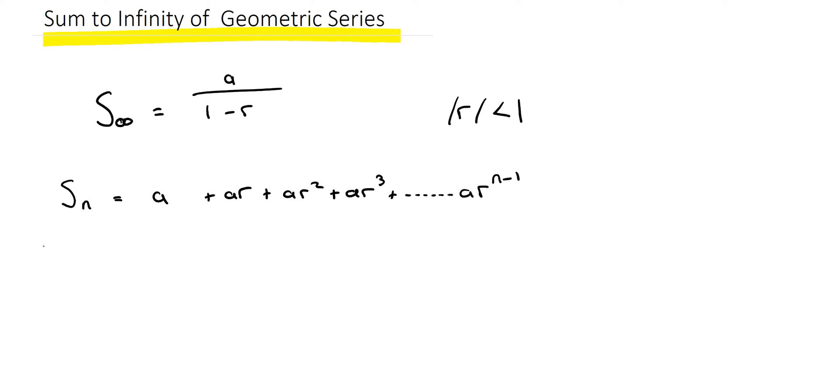What we then do is directly below it write in r times Sn. So we've multiplied both sides by r, so I'm going to have ar plus ar squared plus ar cubed plus ar to the four.